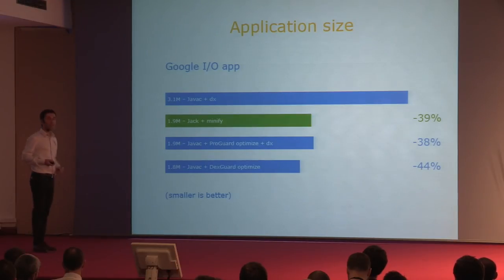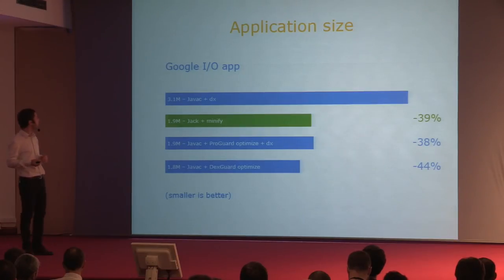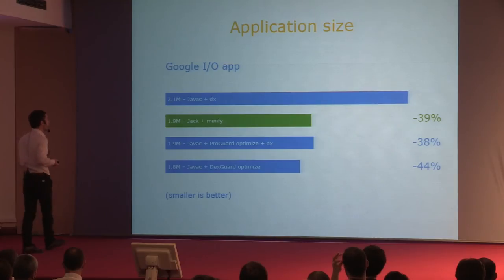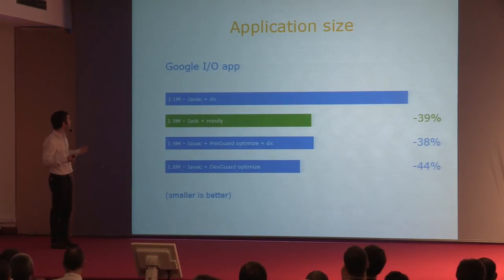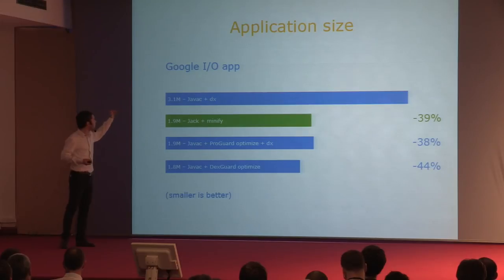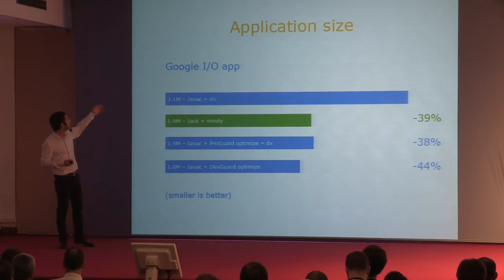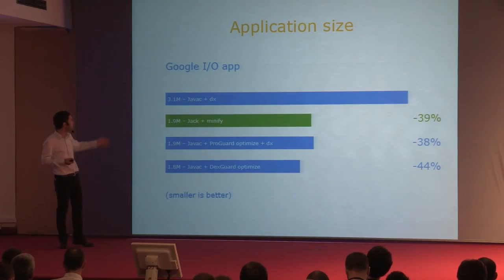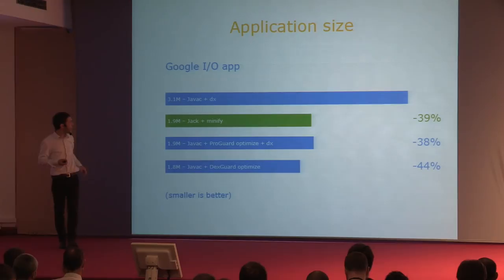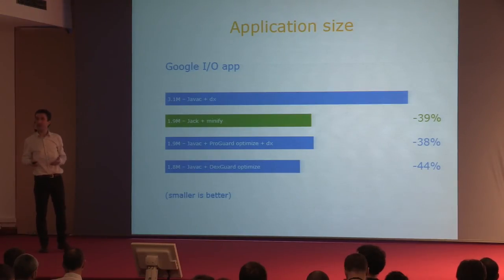Finally, I've looked at application size—the size of the end result, the APK file. If you don't perform any optimization, minification, or shrinking, you get a 3.1 megabyte APK in the case of the Google I/O app. If you use Jack, you get a significant reduction, similar to ProGuard, and with DexGuard you can do a bit better. That's still a nice result.